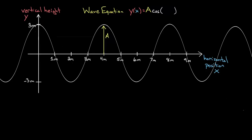So x alone isn't gonna do it, because if you've just got x, it always resets after two pi. I play the same game that we played for simple harmonic oscillators, and I say that this is two pi divided by — not the period this time, because this is not a function of time, it's just a function of x. So this would not be the time it takes for this function to reset; it would actually be the distance that it takes for this function to reset — in other words, what we call the wavelength. The distance between two peaks is called the wavelength, and we represent it with the Greek letter lambda. So we divide by lambda and then multiply by x.